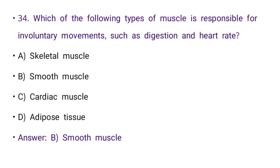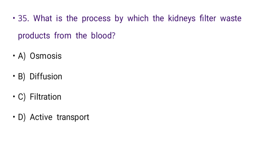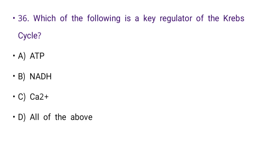Next: What is the process by which the kidneys filter waste products from the blood? Options: osmosis, diffusion, filtration, or active transport. The right answer is C: filtration.